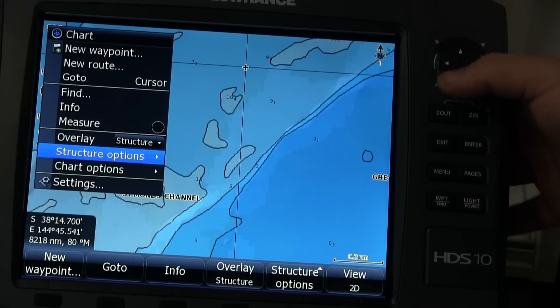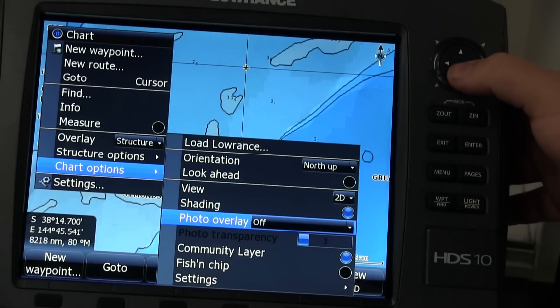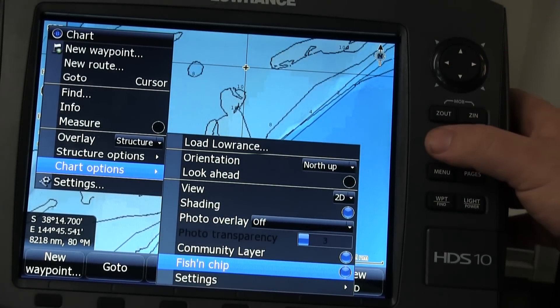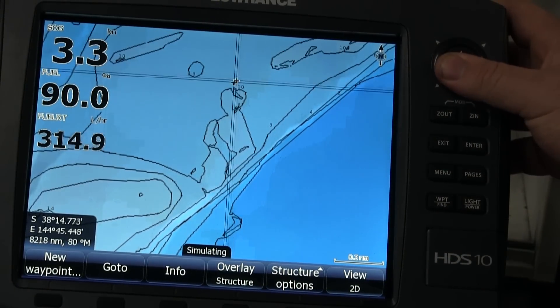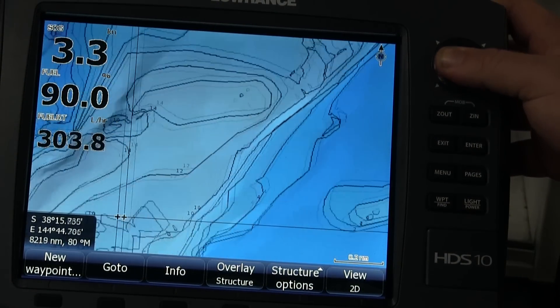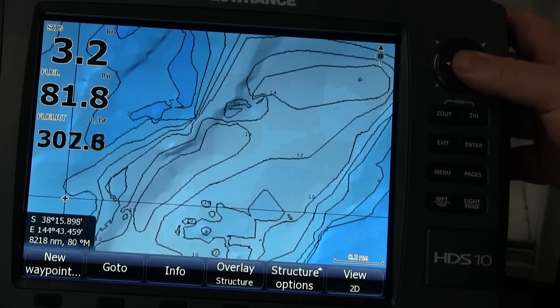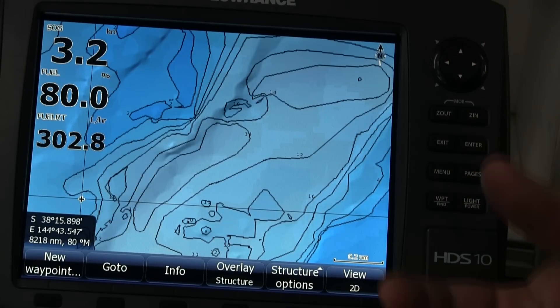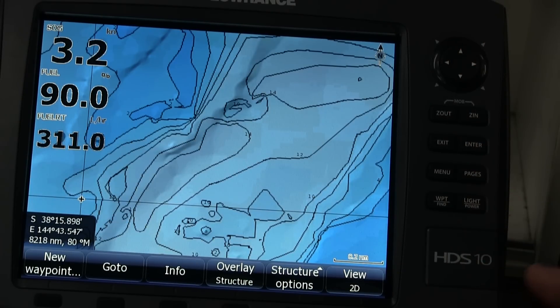But once again, if I go into my chart options, turn my fish and chip on, I'm suddenly seeing the fine changes. Now we're able to see all the extra data here. I can see where it rises, where it falls, everything that we need to be able to see. It's easy to see.